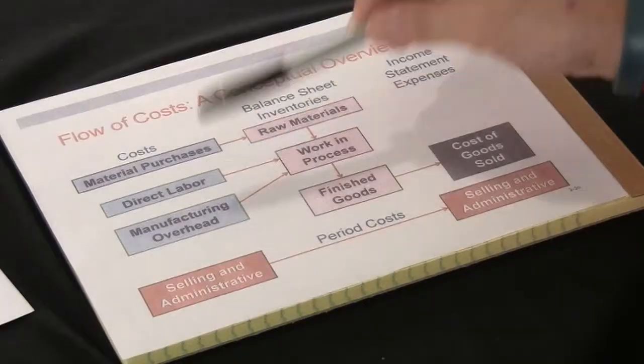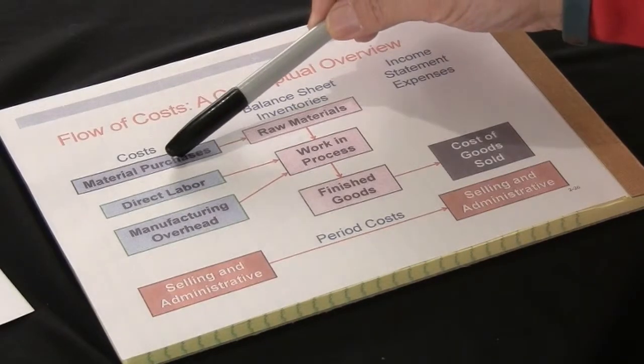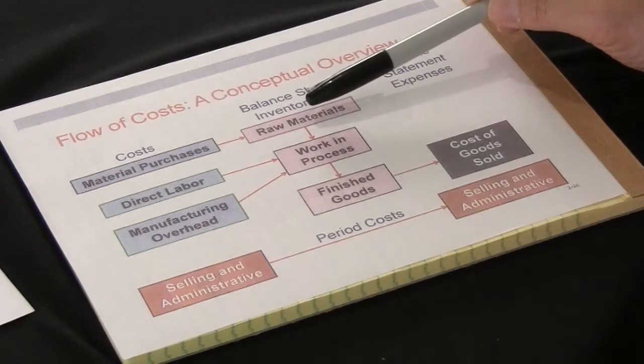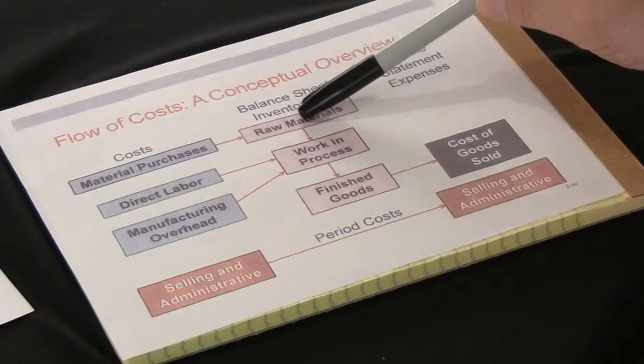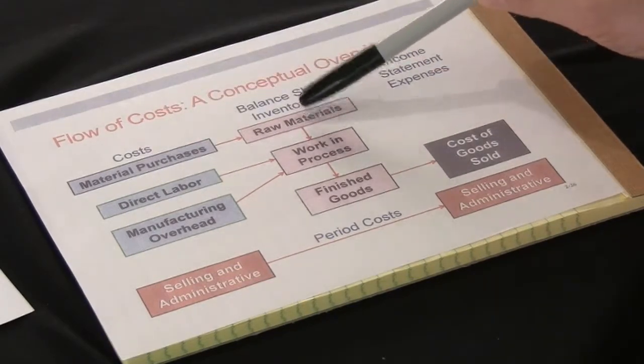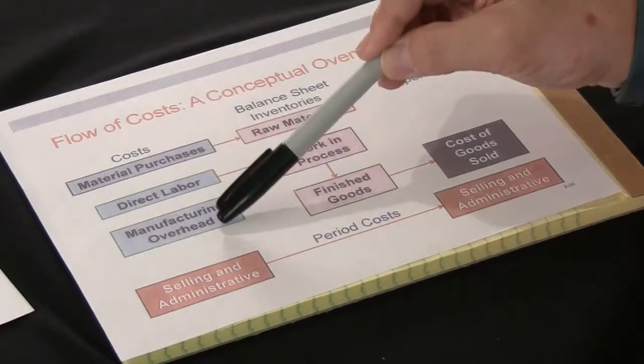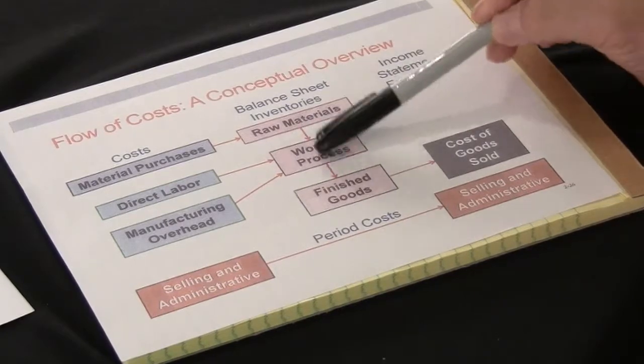This is a conceptual overview of the flow of costs in a manufacturing environment, applied to a job order costing system. When we buy raw material, that material purchase cost goes into raw material inventory — it is a balance sheet inventory account, unique and distinct from any other. In a manufacturing environment there are three inventory accounts, whereas you may be used to inventory as one account, as at a Nordstrom or a Foot Locker. When you buy raw material it goes into raw material inventory at cost, and that raw material ultimately gets issued to work in process.